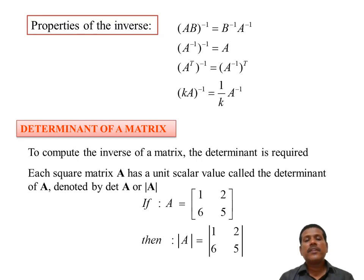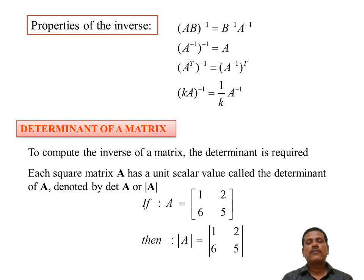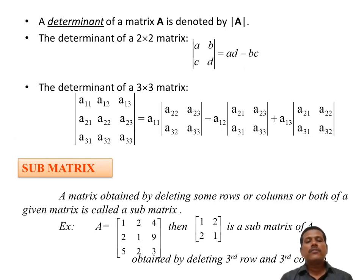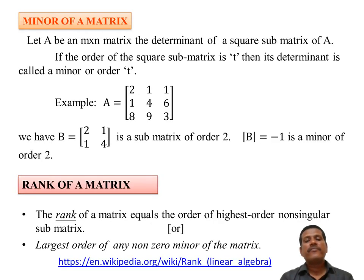Determinant of a matrix: to compute the inverse of a matrix, the determinant is required. Each square matrix A has a scalar value called the determinant of A, denoted by det A. Sub-matrix: a matrix obtained by deleting some rows and columns of a given matrix is called a sub-matrix. For example, if A equals [1,2,4; 2,1,9; 5,2,3], then [1,2; 2,1] is a sub-matrix of A, obtained by deleting the third row and third column. The minor of a matrix is the determinant of a square sub-matrix of the given matrix.